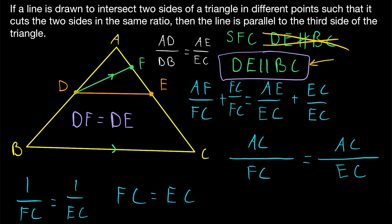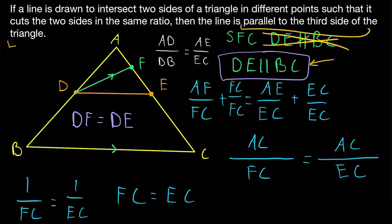And that is how we prove the converse of the basic proportionality theorem: if a line is drawn to intersect two sides of a triangle in different points such that it cuts the two sides in the same ratio, then the line must be parallel to the third side. Combined with the basic proportionality theorem, we have a biconditional: a line cuts two sides in the same ratio if and only if it is parallel to the third side. So given either piece of information, we can conclude the other.